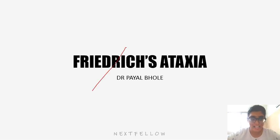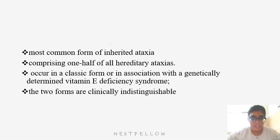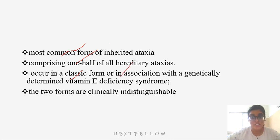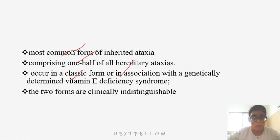Friedreich's ataxia is the most common form of inherited ataxias, comprising almost 50% of all hereditary ataxias. It occurs in the classic form or in association with genetically determined vitamin E deficiency. These two forms are clinically indistinguishable.